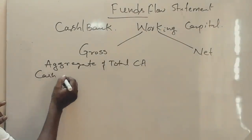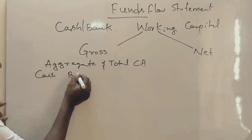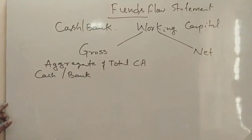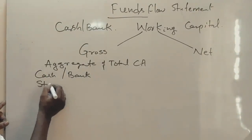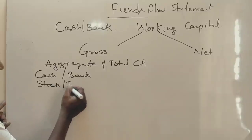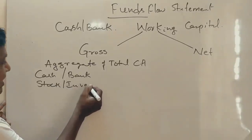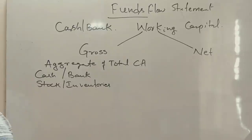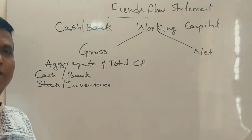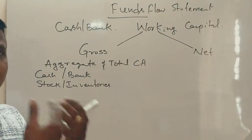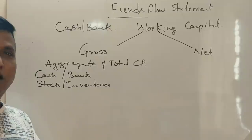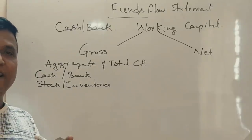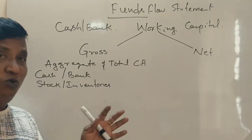Current assets include: cash in hand, cash at bank, and stock (inventories) at the end of the year. Stock may be in raw material, stock may be in work in progress, or stock may be in finished goods.